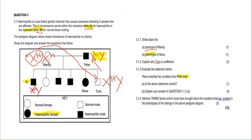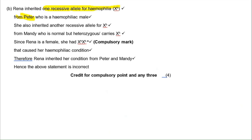This is why filling in all the genotypes beforehand is so important — it makes the questions easy to answer. Reina inherited one recessive allele X small h from Peter, who is hemophilic. She also inherited another recessive allele X small h from Mandy, who is normal but heterozygous — a carrier. Since Reina is female she must have XX, and having both small h alleles causes hemophilia. The compulsory mark is writing X small h, X small h.